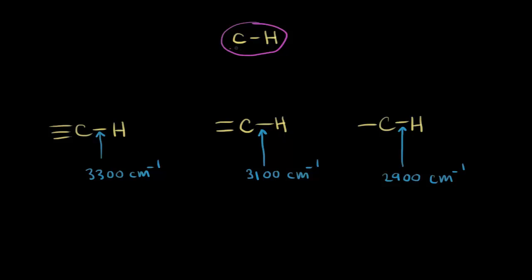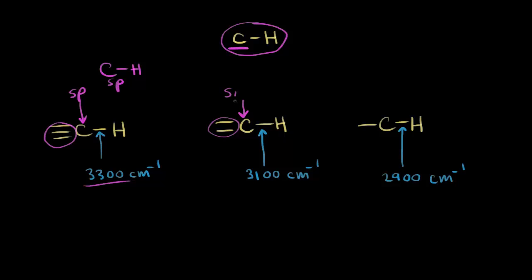That wave number depends on the hybridization state of the carbon, so let's look at some examples. If the carbon is sp-hybridized — we know this because of the triple bond — the signal for that carbon-hydrogen bond stretch shows up at about 3,300 wave numbers. If the carbon has a double bond and is sp-2 hybridized, the signal shows up at about 3,100 wave numbers.